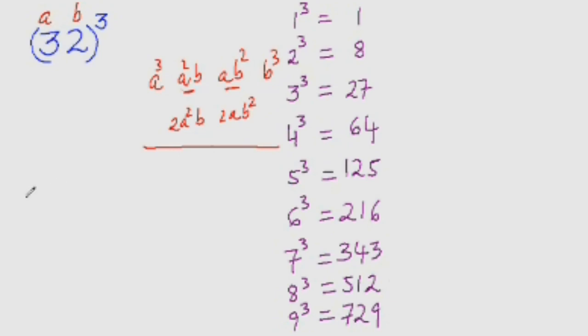So A cube would be 3 cube that is 27. Now A square B, so 3 square is 9 and 9 times 2 is 18. So double of 18 is 36. Now AB square, so B square is 4 and 4 times 3 is 12. So we write 12 here and double of 12 is 24.